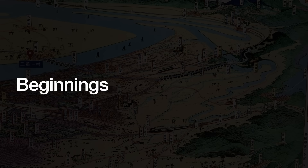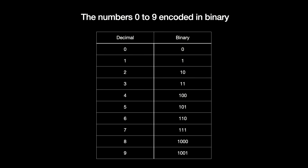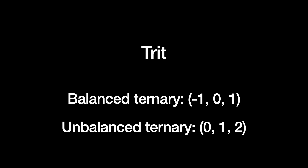Let me give the theoretical pitch for the trit. Imagine encoding a piece of information into a digital format using a certain base — the number of discrete states that each digit can represent. A binary digit, i.e. a bit, represents two states: 0 or 1. A ternary digit, i.e. a trit, represents three states — usually either balanced ternary with states negative one, zero, one, or unbalanced ternary with states zero, one, and two.